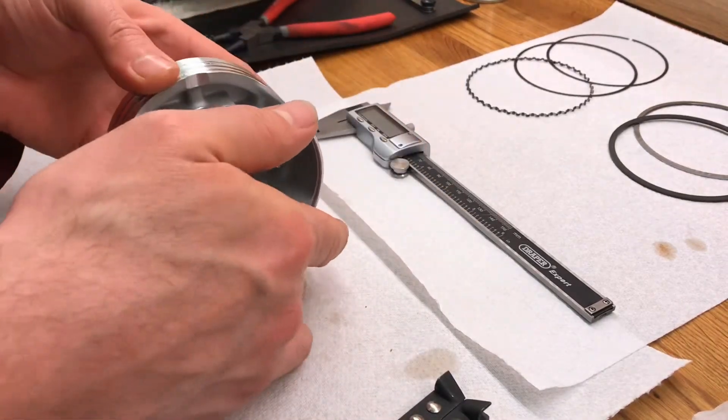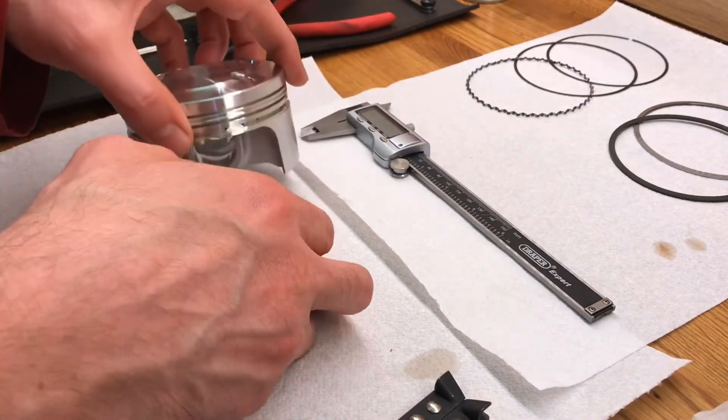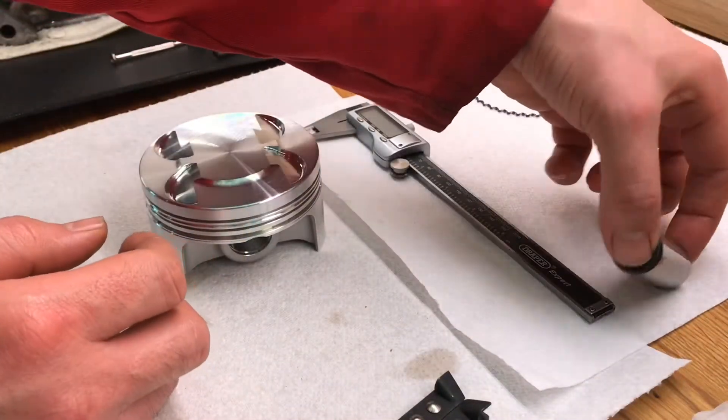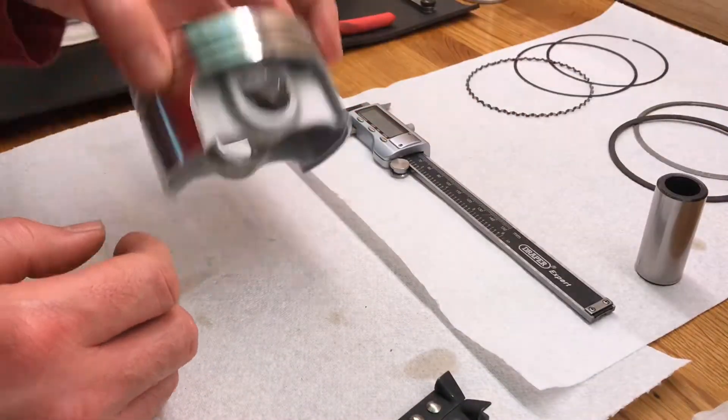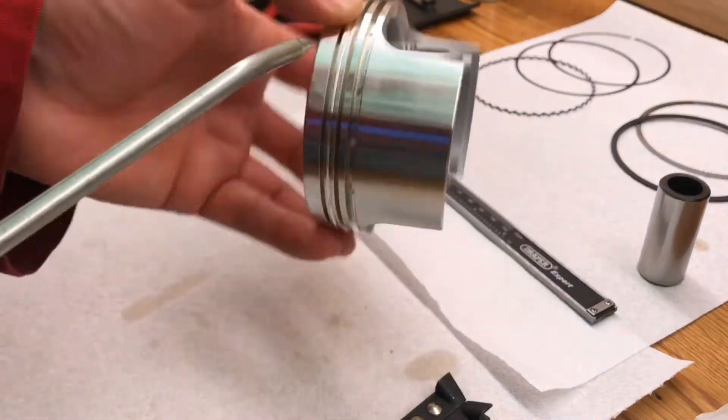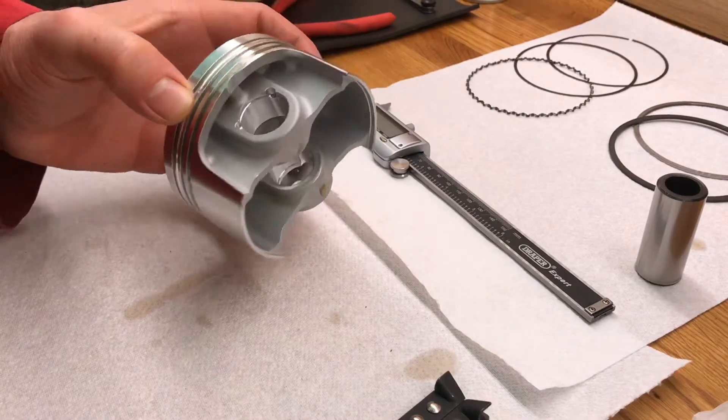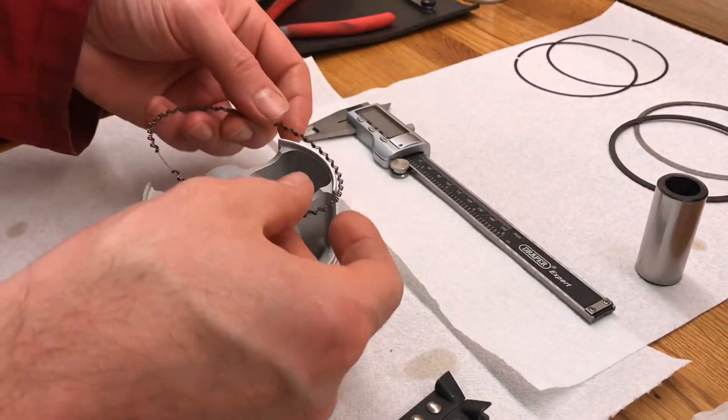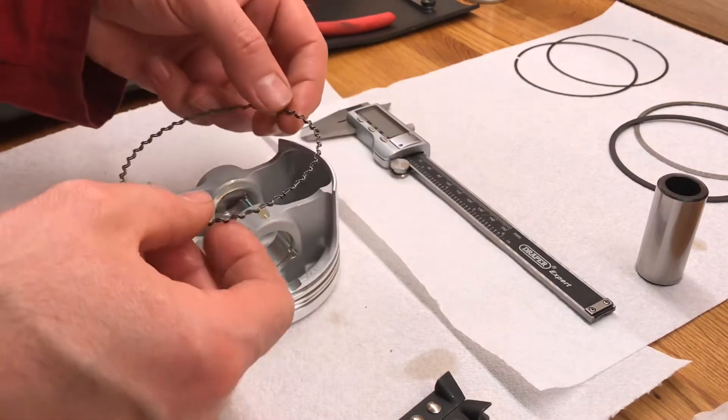Let's just show you how I'm putting the rings in to the piston. Take the piston pin out and then what I've done here is I've lubricated the grooves in the piston. Now start with my oil expander ring, just place that on.